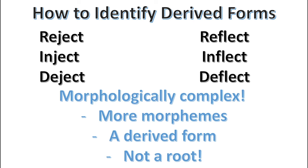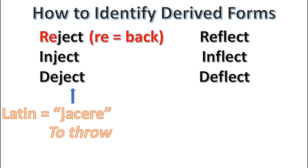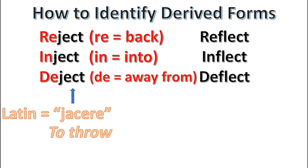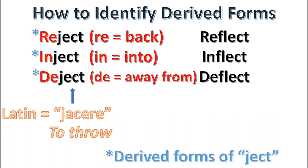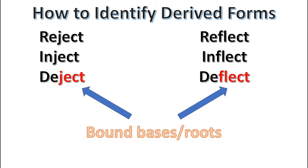In the case of 'reject,' 'inject,' and 'deject,' the root 'ject' means 'to throw away from.' Once we recognize 'ject' as carrying meaning, it's easy to see these are three derived forms. The same is true for 'flect' in 'reflect,' 'inflect,' and 'deflect,' which is derived from the Latin 'flectere,' meaning 'to bend.' So 'reflect' means to bend back, 'inflect' means to bend inward or into, and 'deflect' means to bend away from. 'Ject' and 'flect' could therefore be considered bound bases or bound roots — roots that can only appear within a derived form. In that sense, these words are morphologically complex.